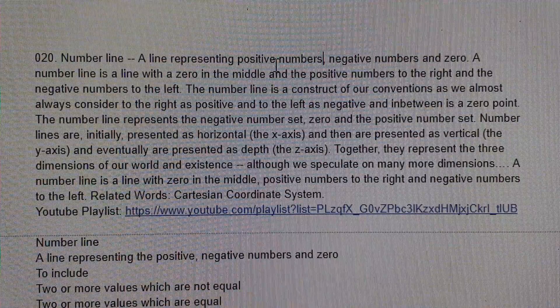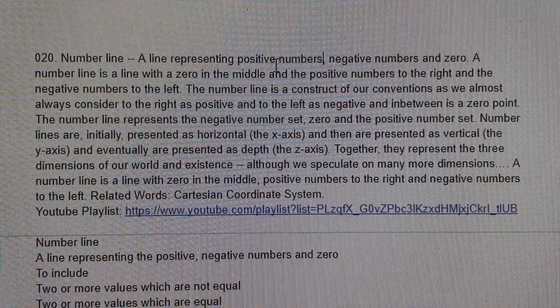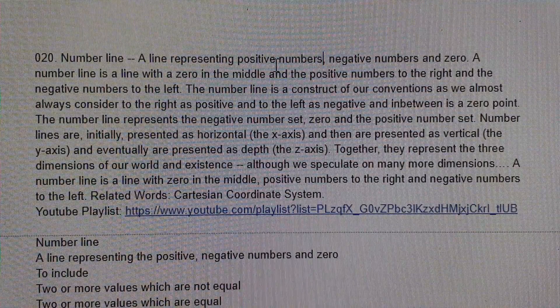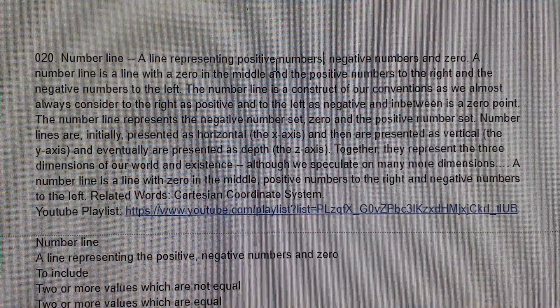The number line is a construct of our conventions, as we almost always consider to the right as positive, and to the left as negative.